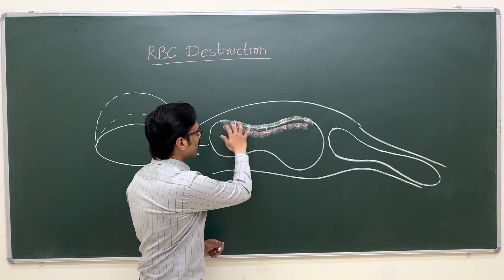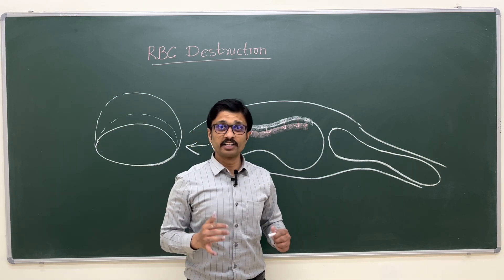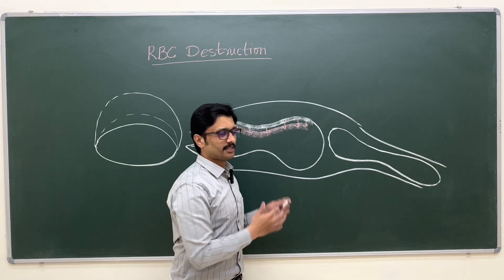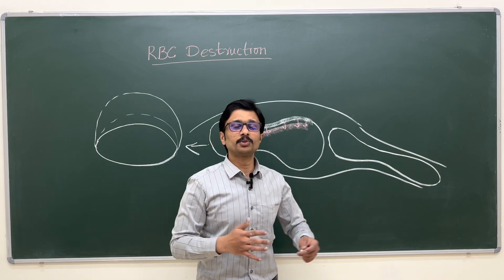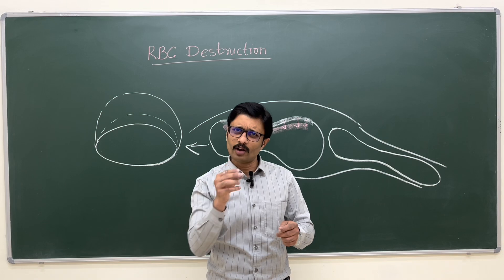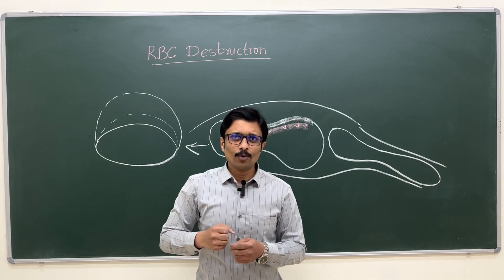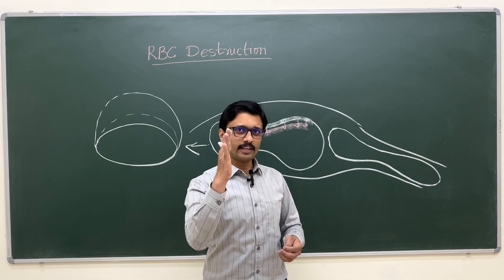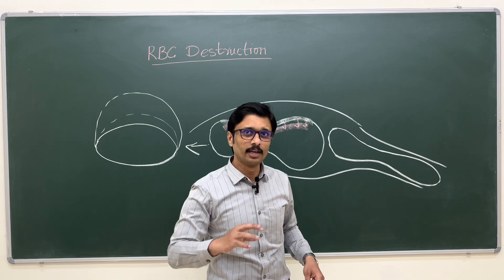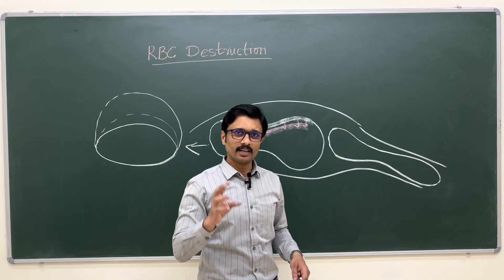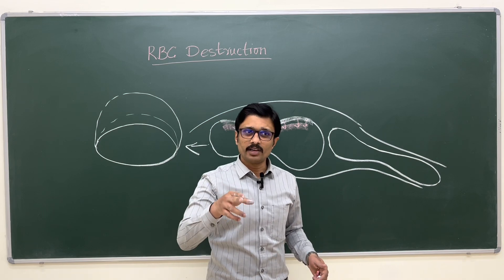The membrane, which was very flexible, becomes very fragile and rigid. When this cell with a rigid membrane tries to pass through the capillaries, there is more friction between the wall of the capillary and the membrane, resulting in rupture of the membrane. Hemolysis can happen when old, fragile RBCs try to pass through the capillaries.